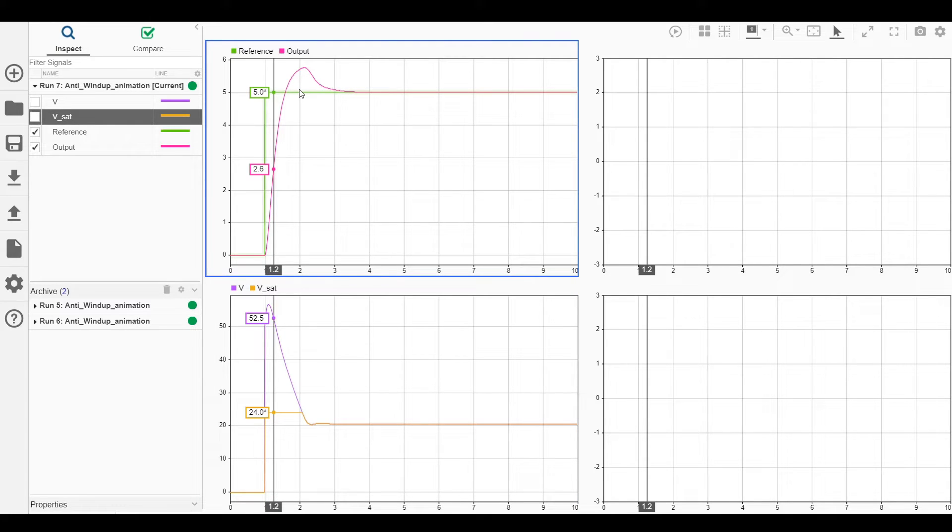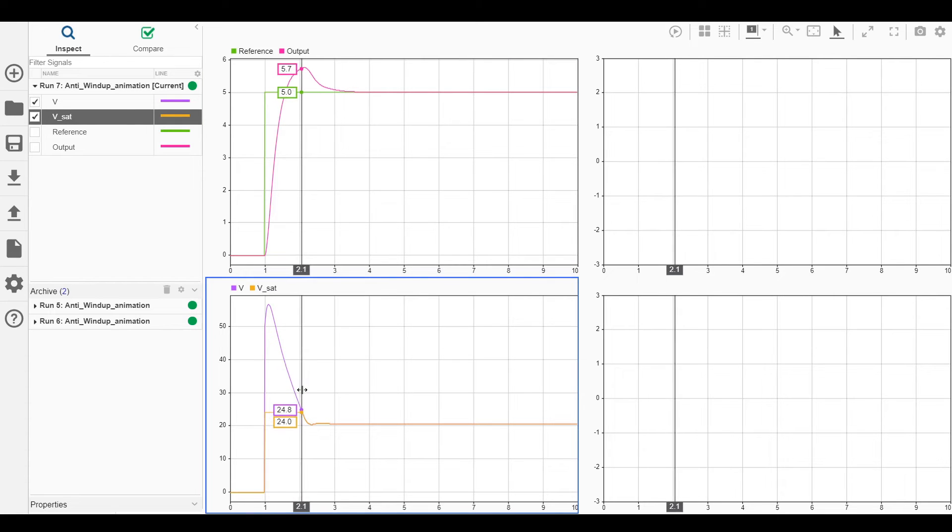Now the error is negative. Hence the integrator output starts reducing. This is called winding up the integrator. We can see V decreasing but it is still above 24V. Hence it will get saturated and the voltage to the motor will be 24V. Finally, when V drops below 24V, the speeds start dropping to the desired speed and we will reach a steady state.